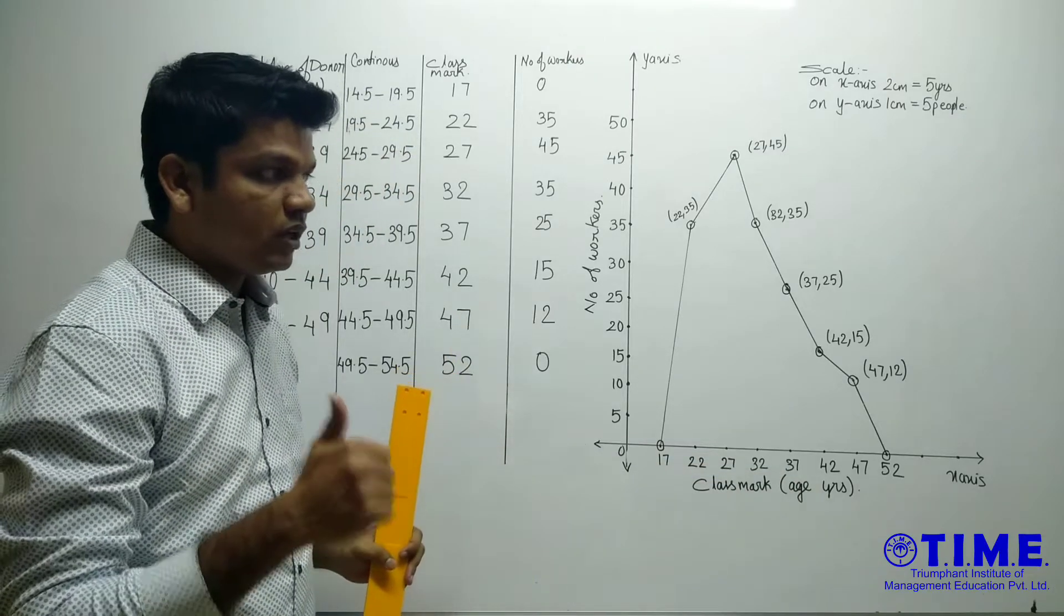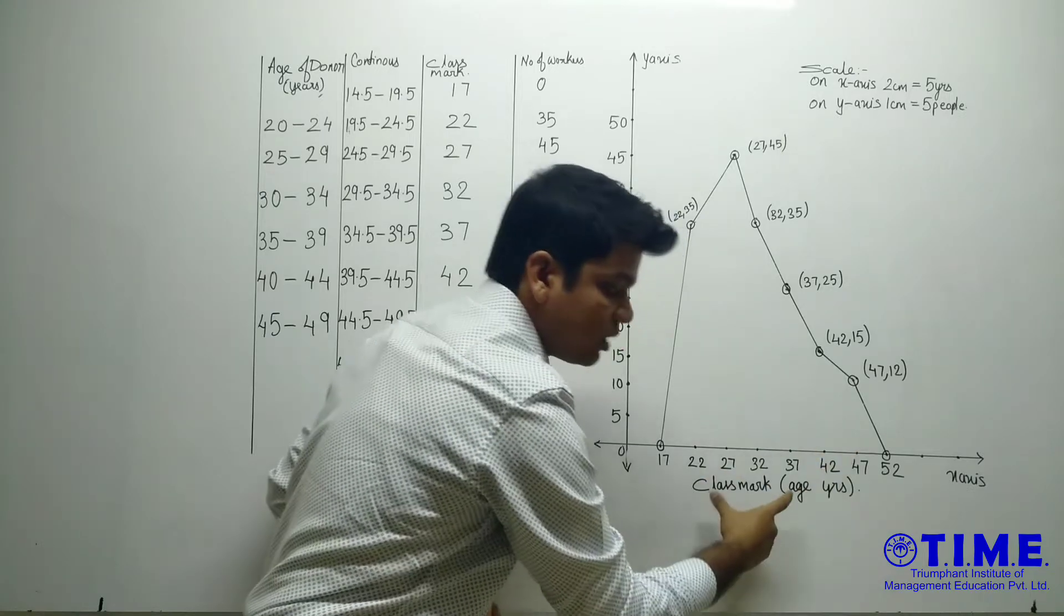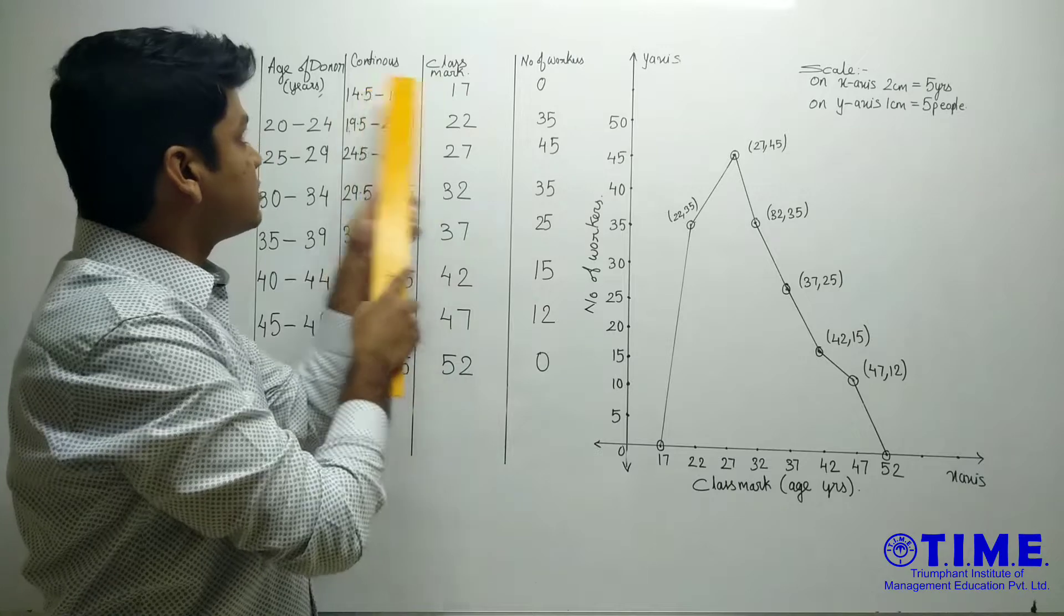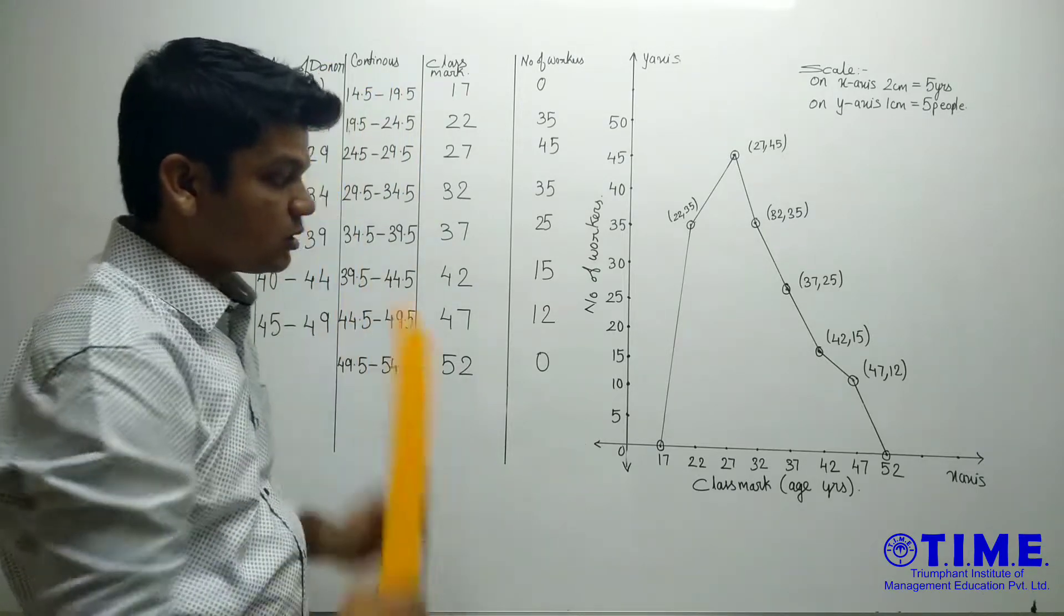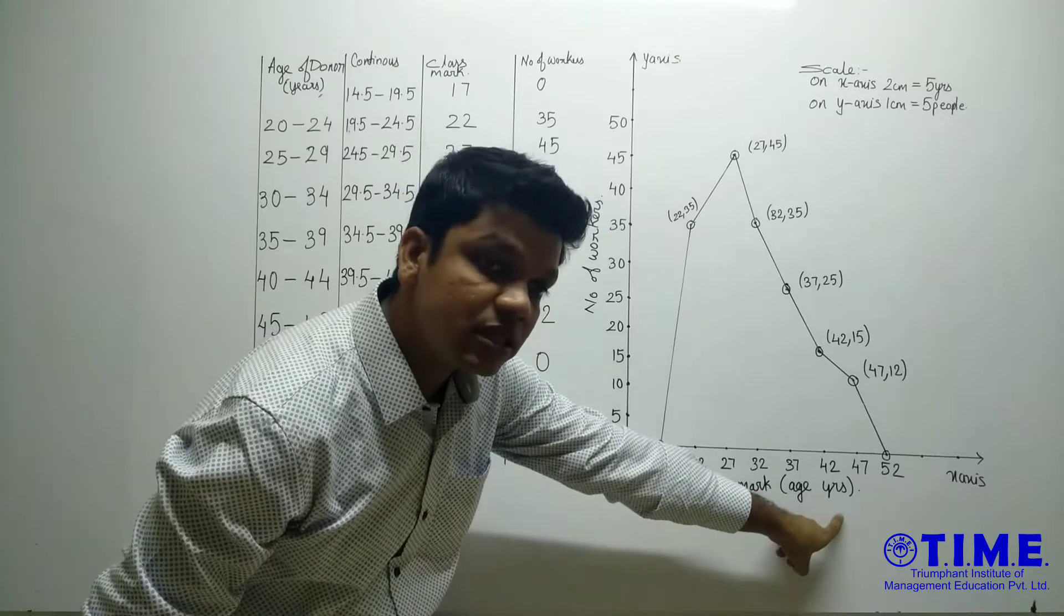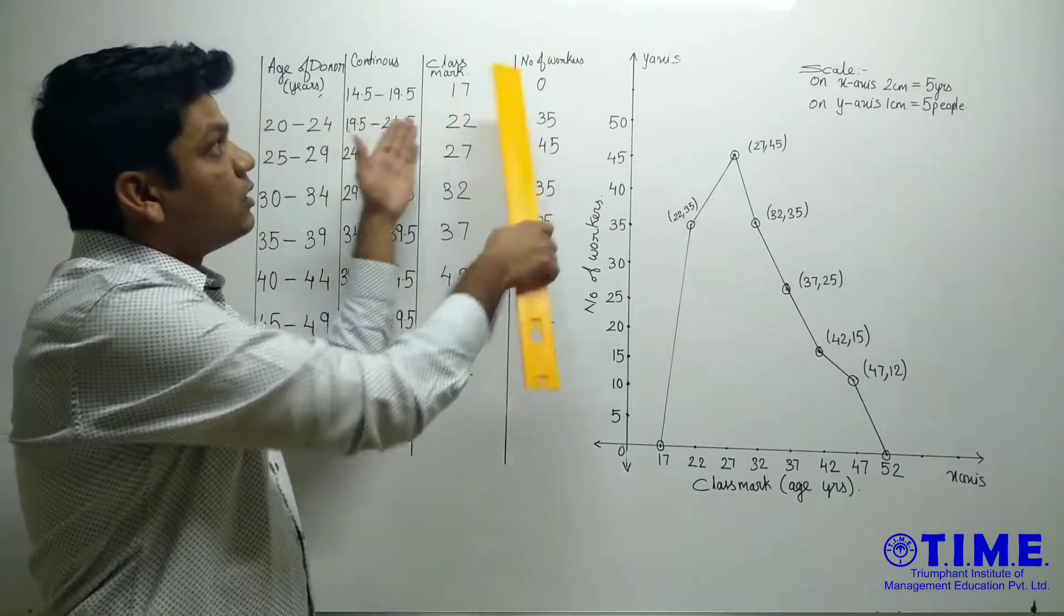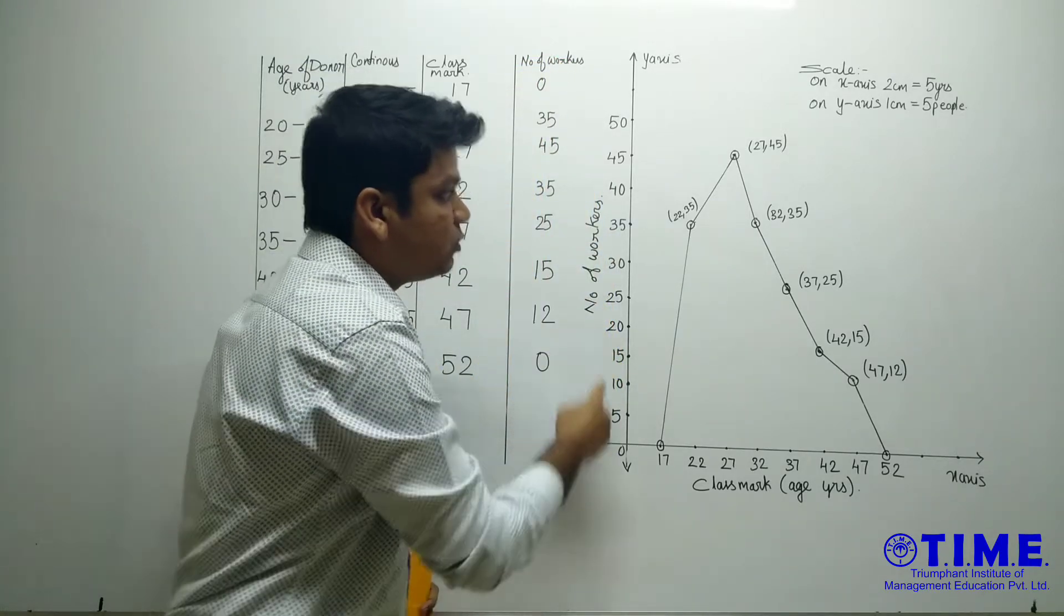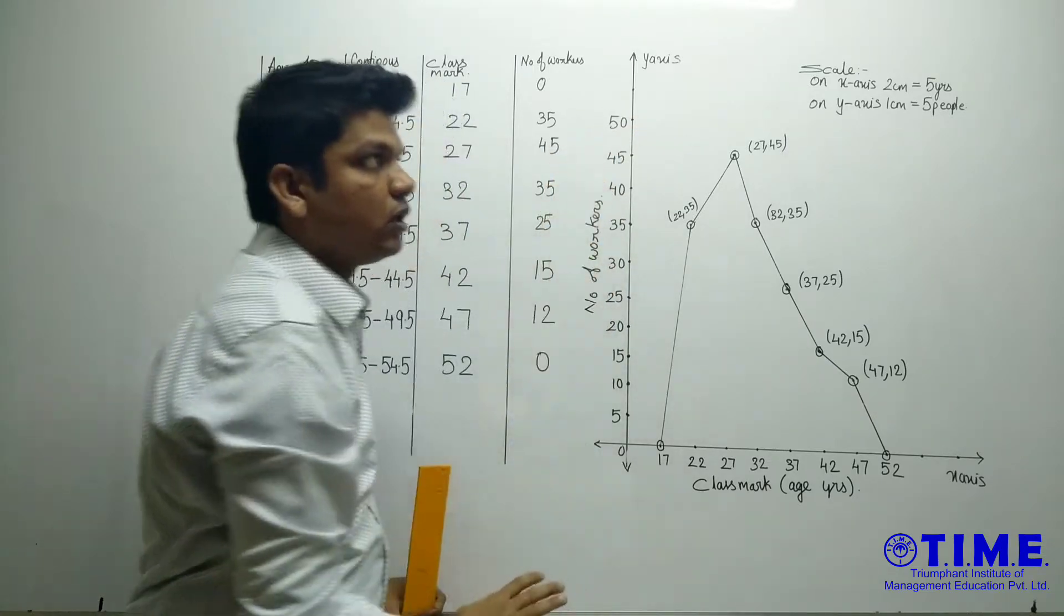Now one more thing which should be noted. Whatever is given like class mark, write that class mark. Then what is that class about? It is about the age of donors, so it is in years. You should mention that it is age in years. Then this frequency is what? Number of walkers. So don't forget to mention what these are, the number of walkers.